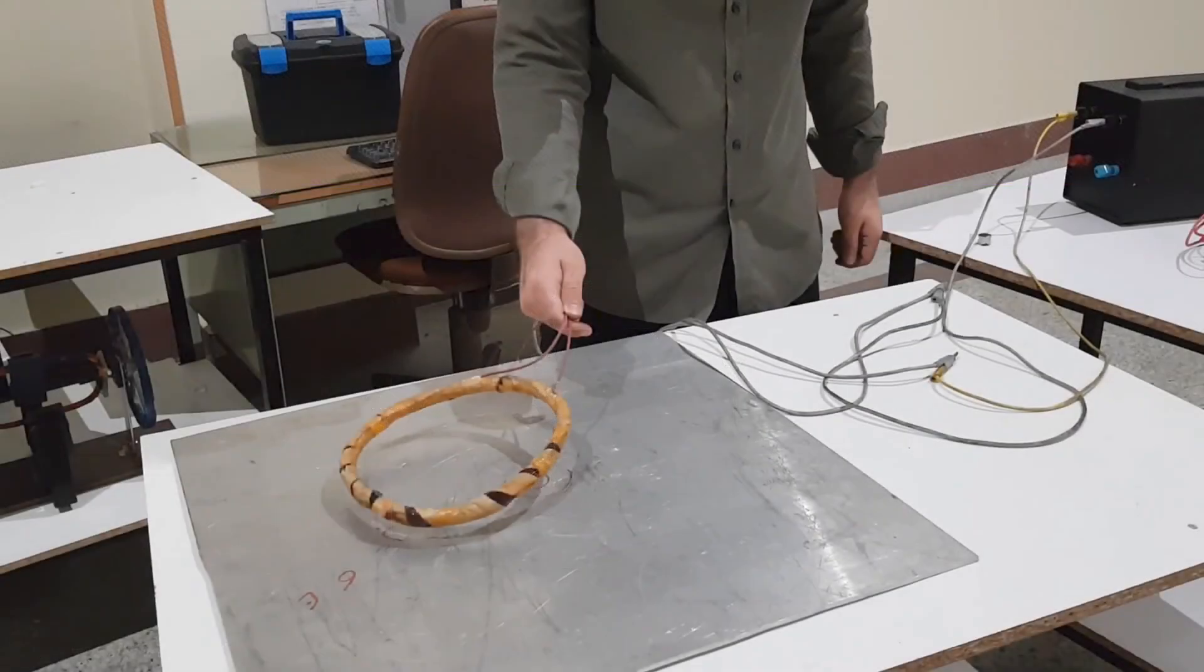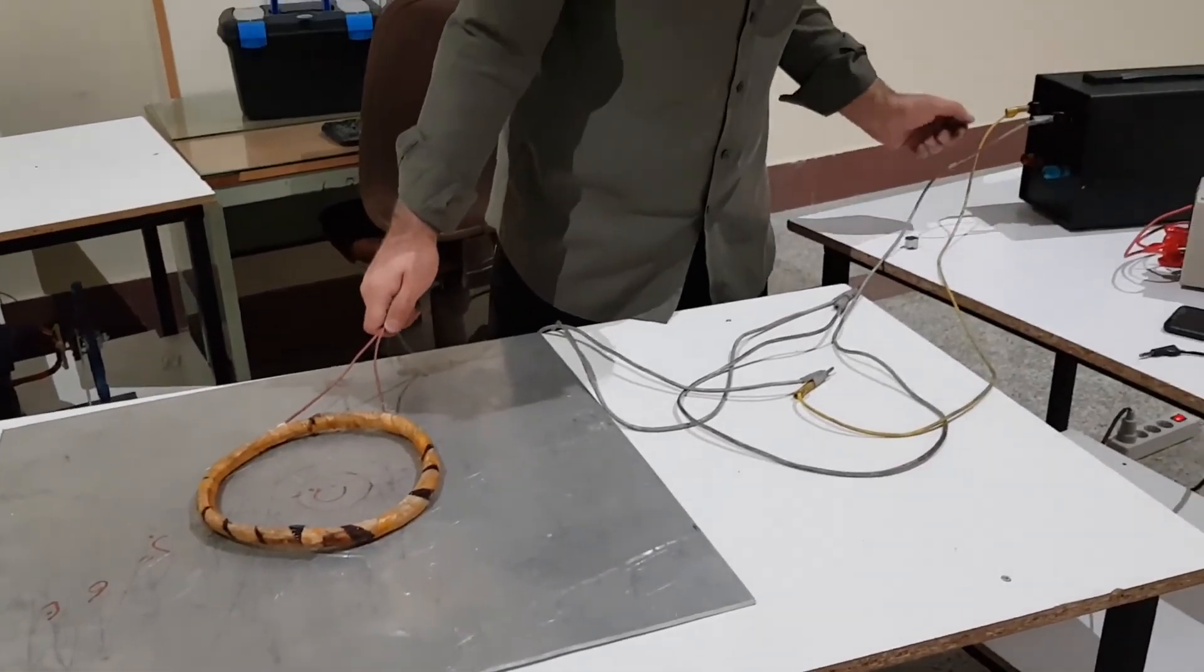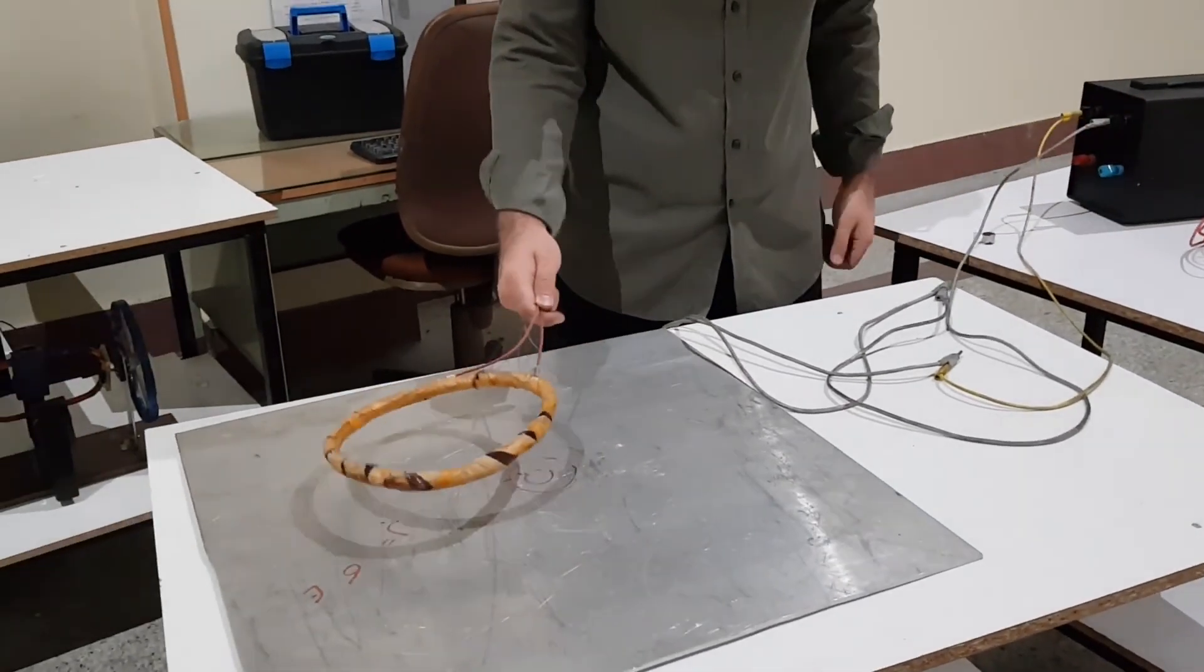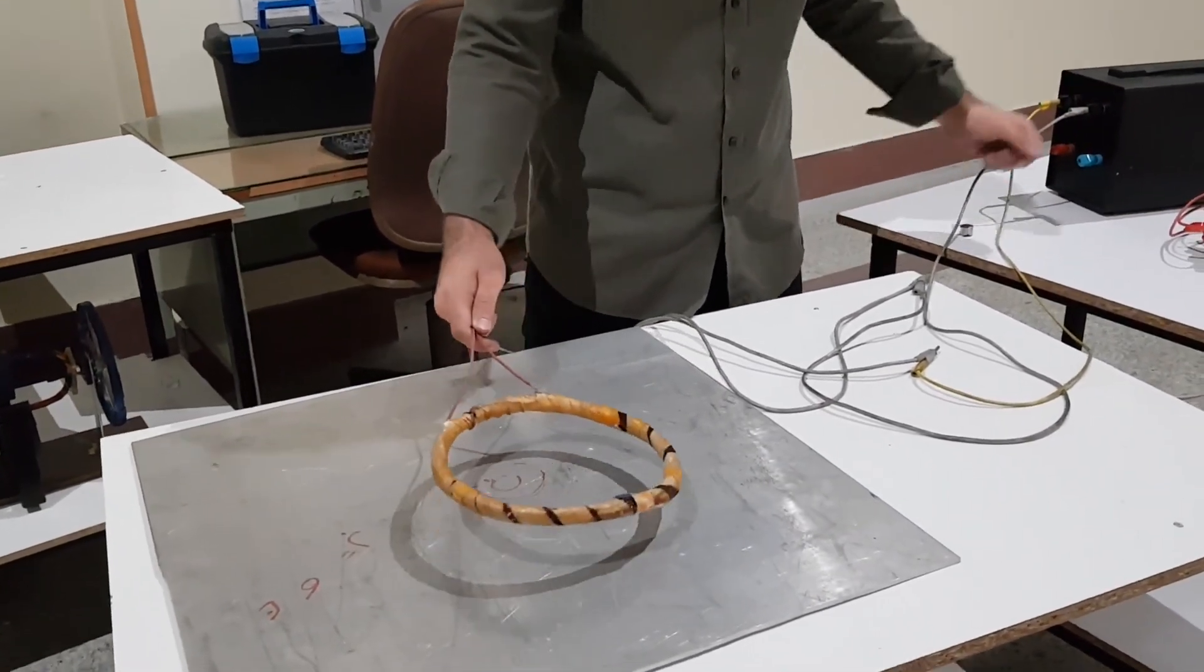Now let's do the experiment. As we turn on the power, the coil starts to levitate. The magnetic force is that much big that it can overcome the coil's gravity force.